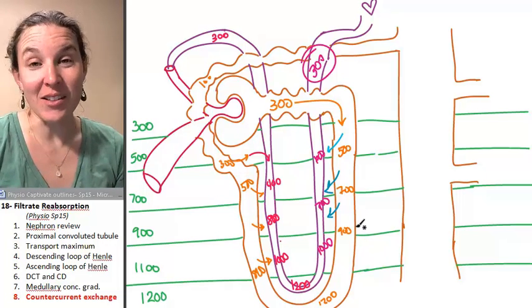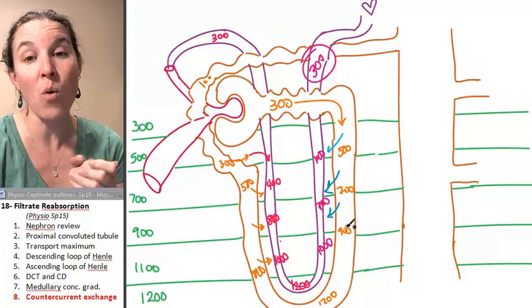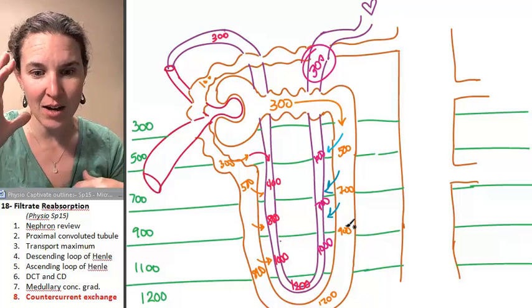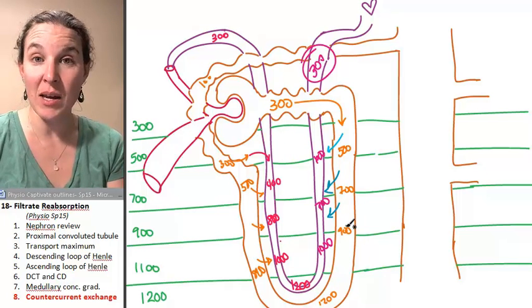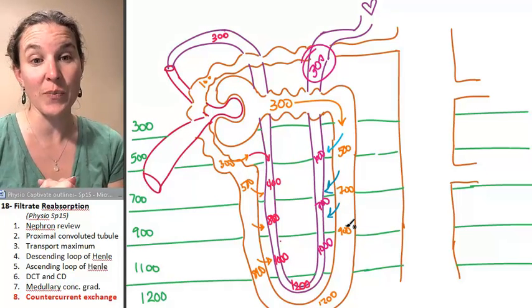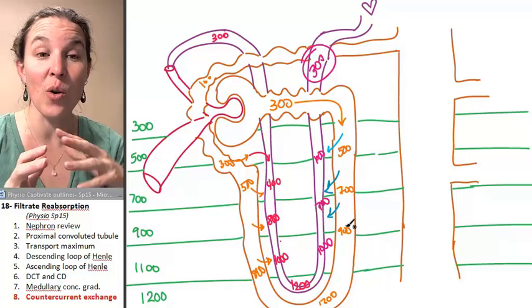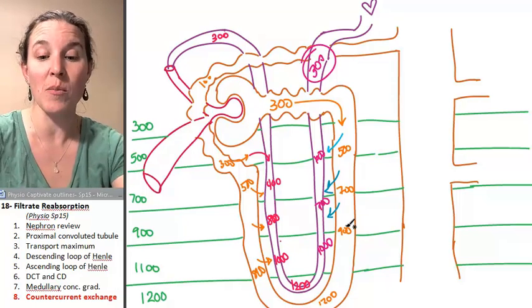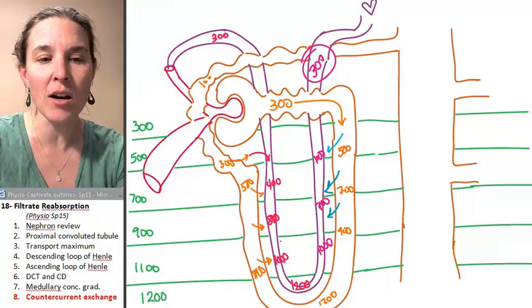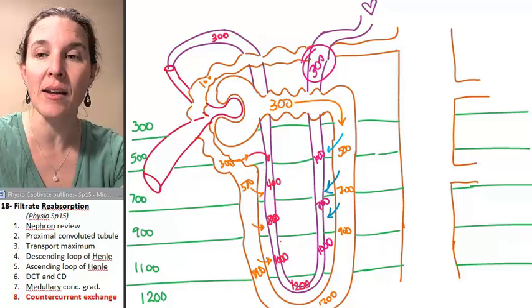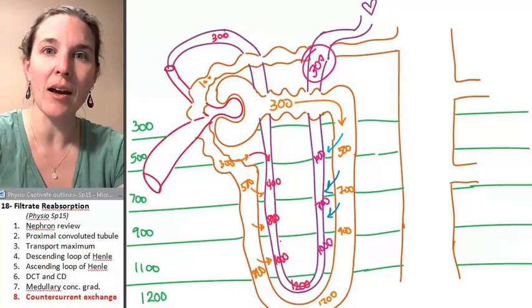We're going to use our medullary concentration gradient in the next section when we talk about, in the next lecture when we talk about how hormones help us maintain osmotic equilibrium. But we're not going to deal again with how it's maintained or how it is established. So it would not surprise me in the slightest if you needed to go mess with this again and again. I can't tell you how many hours I've spent messing with this. It's definitely a tricky concept. So spend some time, share any resources that you find that are awesome, and kidneys part two, cha-ching, kidneys part three, coming up.